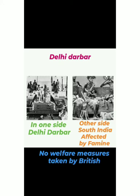No welfare measures were taken by the British at that time. As shown in this picture, two sides are visible: on one side, the Delhi Darbar with great pomp, and on the other side, South India affected by famine, with nothing done by the British to help. All these three points — the Vernacular Press Act, the Arms Act, and the Delhi Darbar — along with all these discriminations and differentiations, created agitation among the Indians. This agitation, basically because of the Lord Lytton acts, made Indians decide to take concrete action against the British.